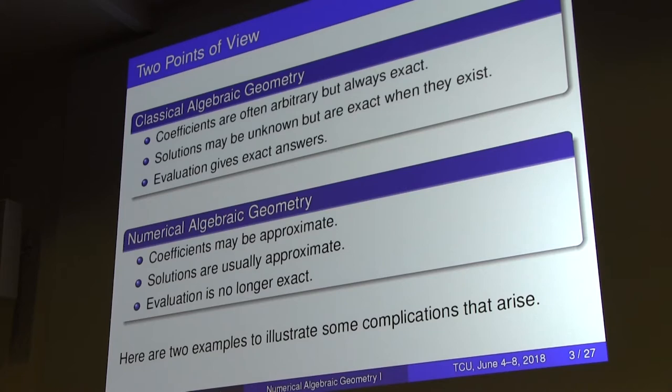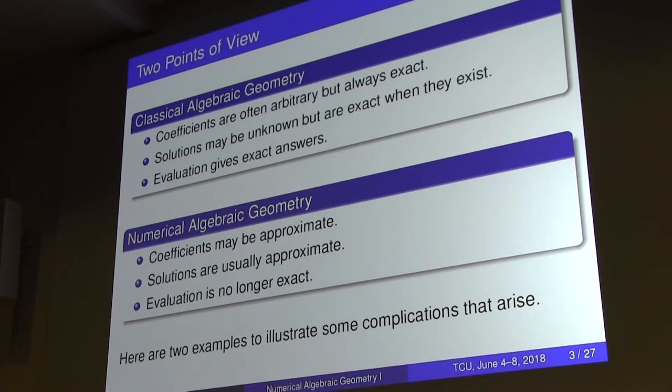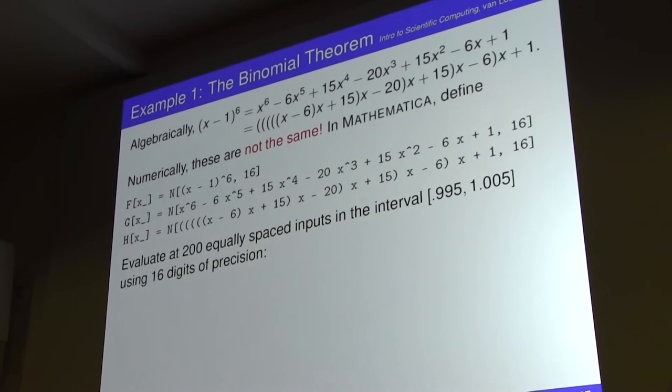The first example is just the binomial theorem, from Van Loon's book Introduction to Scientific Computing. You take (x−1)^6, expand it by the binomial theorem, and get one form. There's also the Horner method, writing the polynomial efficiently in terms of multiplications. Algebraically these are the same — but numerically, they aren't.